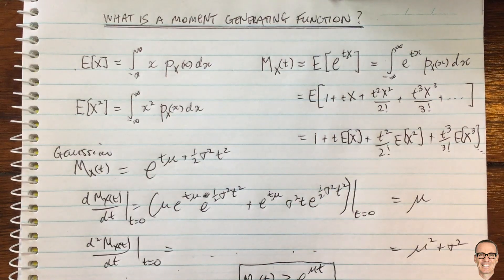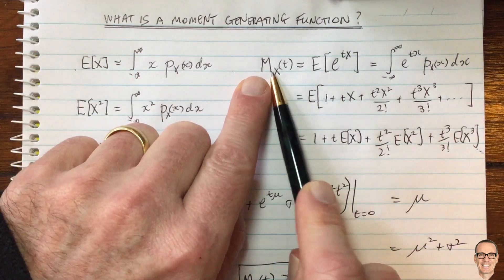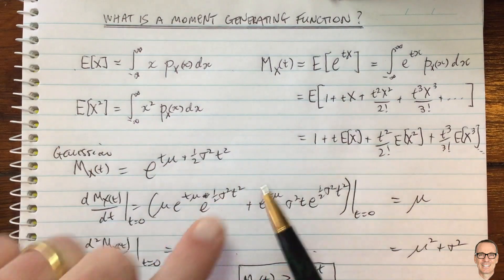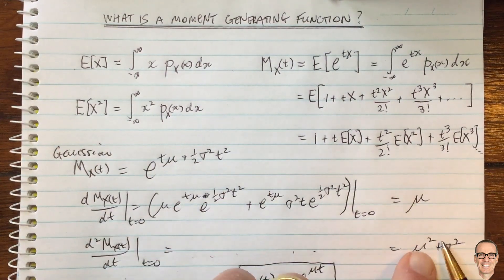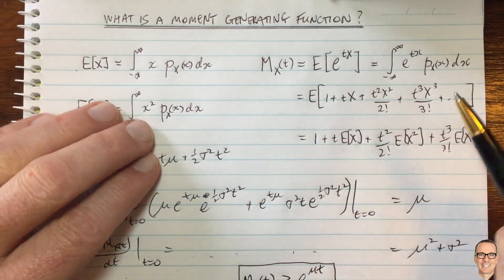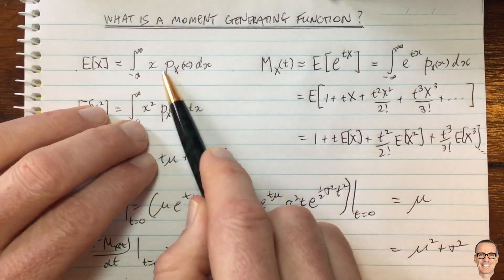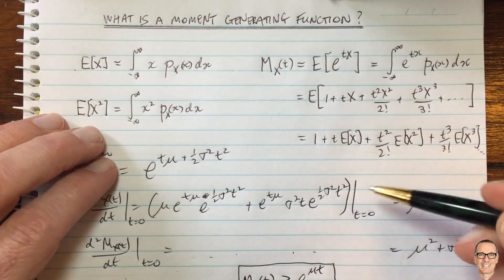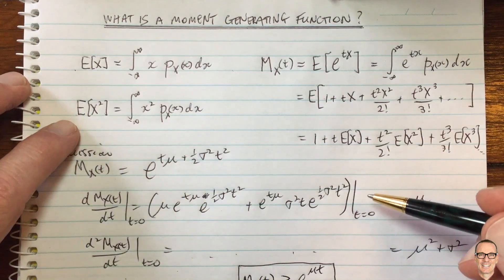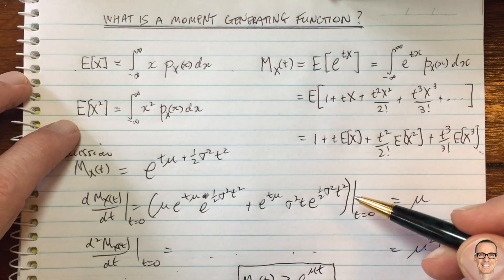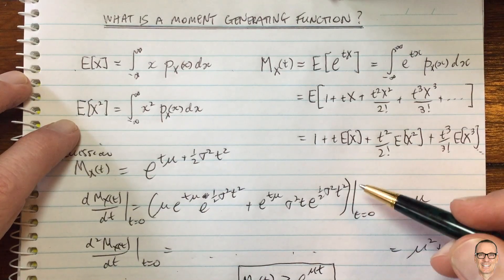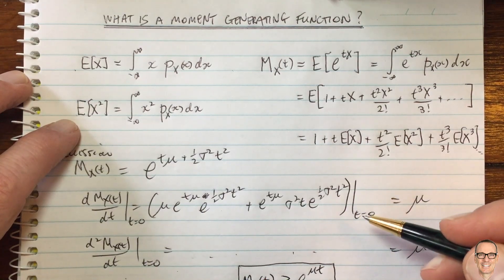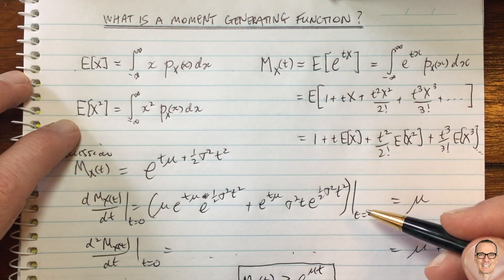So this was the moment generating function — a compact way to calculate all of the moments for the distribution of a random variable. If you found this helpful, give the video a thumbs up, subscribe to the channel for more videos, and check out the links in the description below where there's a webpage with a full categorized list of all the videos on the channel.